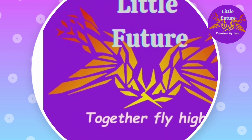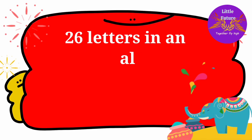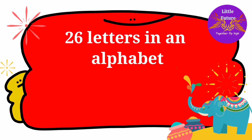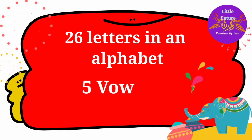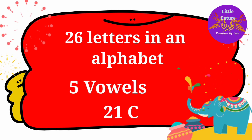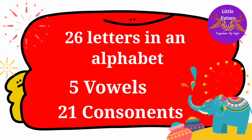There are 26 letters in an alphabet. 5 are vowels. 21 are consonants.